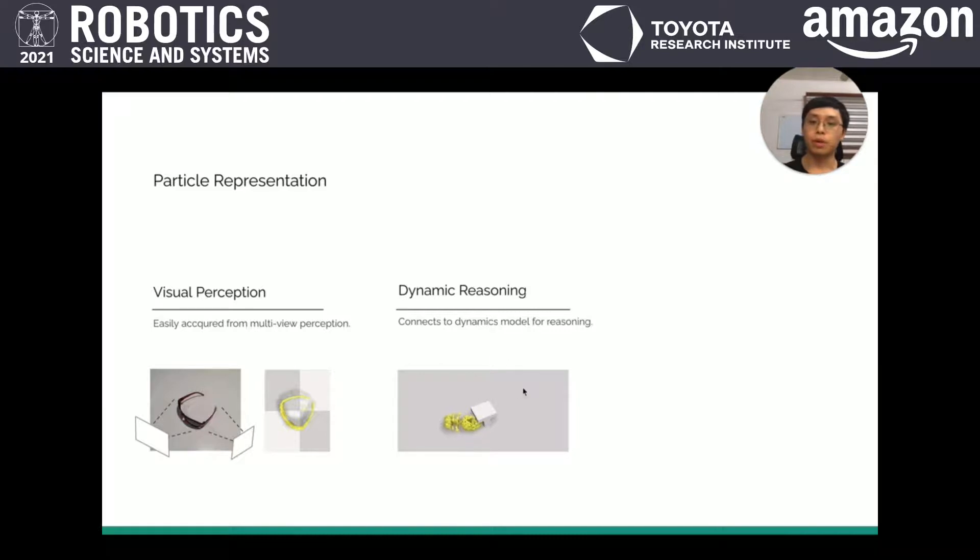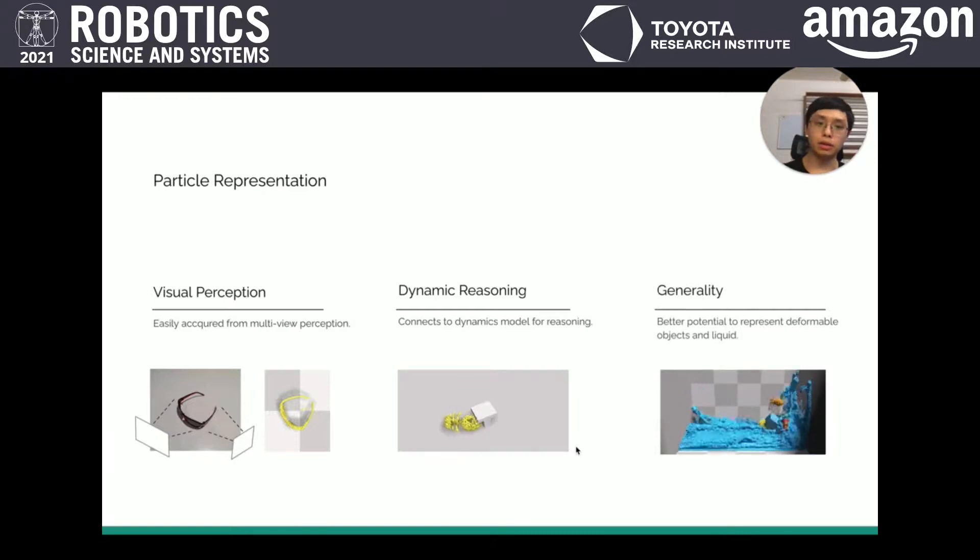For example, if we are trying to grasp the object with incorrect angles, it may result in a slip-over, which is a failure case. By reasoning about the physics, we can find the best actions to perform. Lastly, generality. The particle representation has great potential to represent deformable objects such as cloth and liquids.